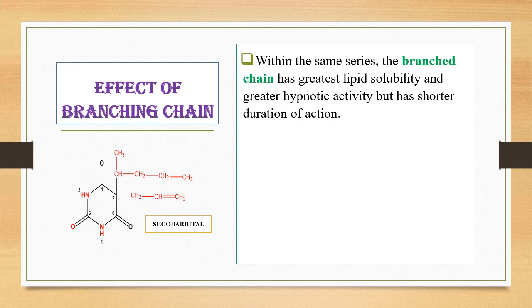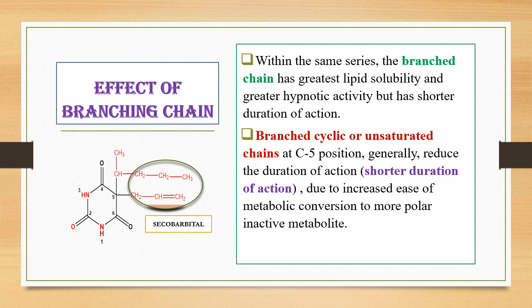Regarding the effect of branching chain at C5: comparing barbiturates with a branched chain at C5 to those without, the branched-chain derivatives have greater lipid solubility and greater CNS penetration, which gives them greater hypnotic activity. However, their overall duration of action is shorter. Similarly, branched cyclic or unsaturated side chains at C5 also reduce the duration of action due to increased ease of metabolic conversion to more polar, inactive metabolites.